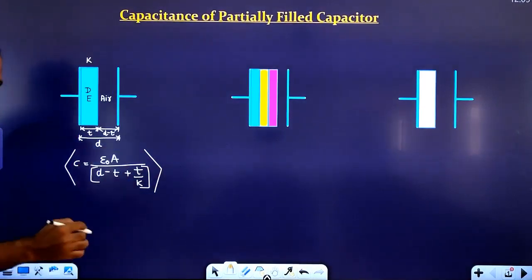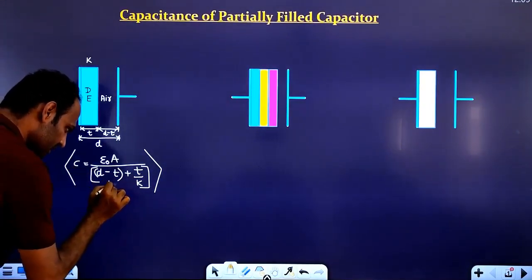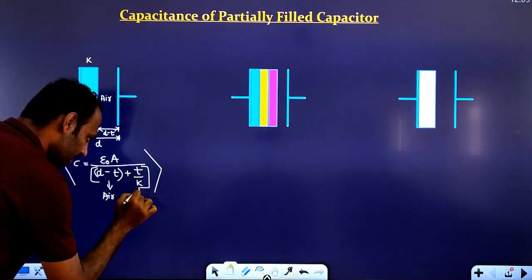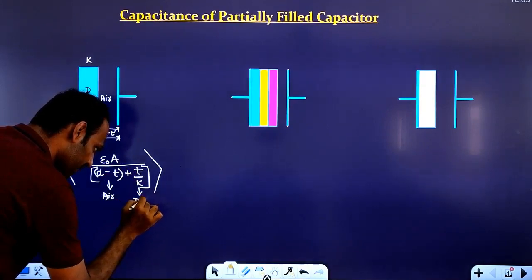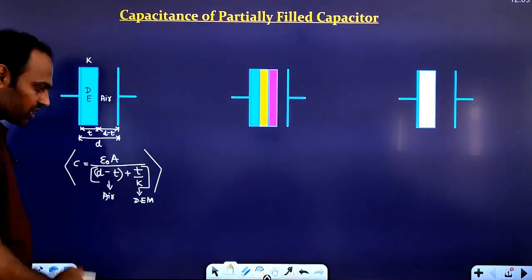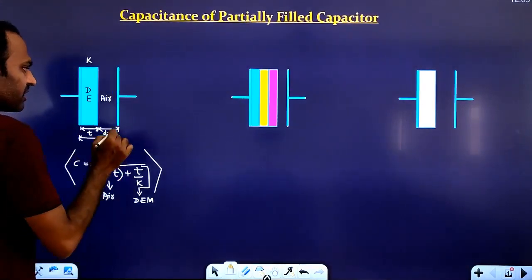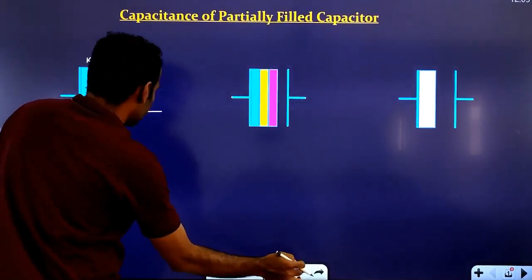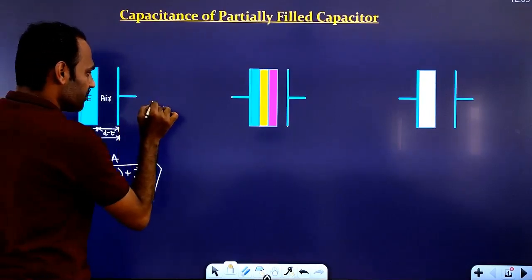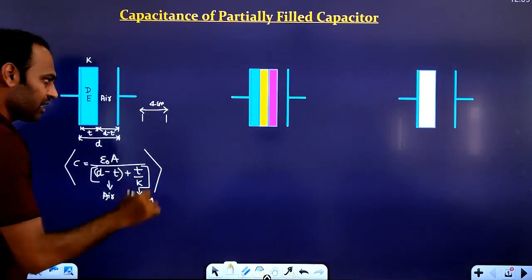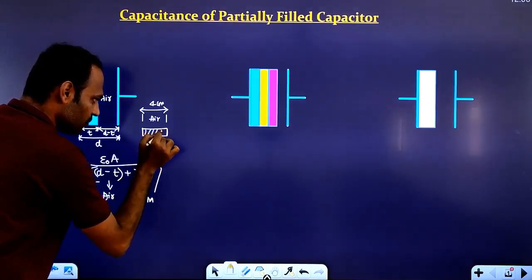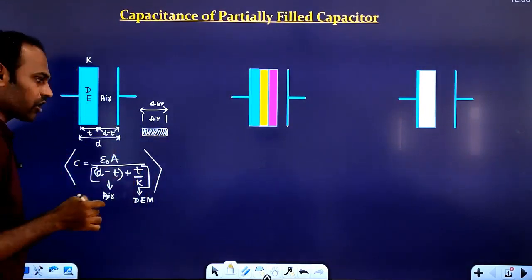D minus T is the distance in which air is present. T by K is the effective distance in the dielectric medium. For example, if the distance is 4 centimeters and the dielectric constant K is 2, the effective distance in the dielectric medium becomes 4 divided by 2, which is 2 centimeters.